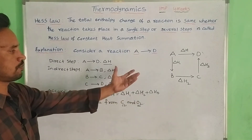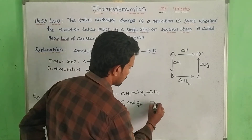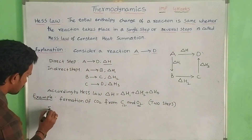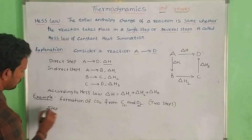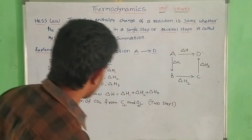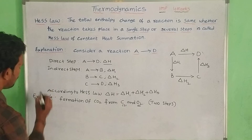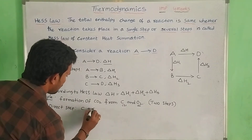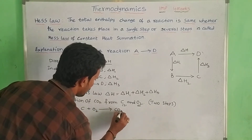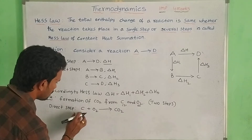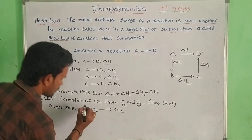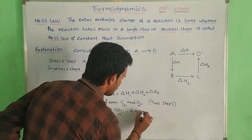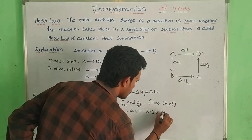This example has two steps. Direct step one: carbon reacts with oxygen to give CO2. Carbon solid phase, oxygen gas phase. Here delta H equals minus 393.5 kilojoules.